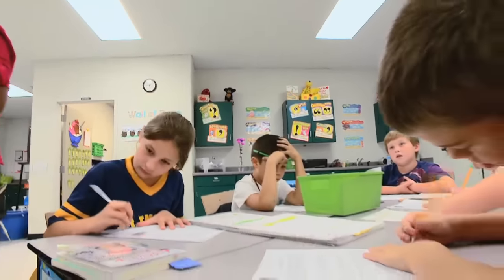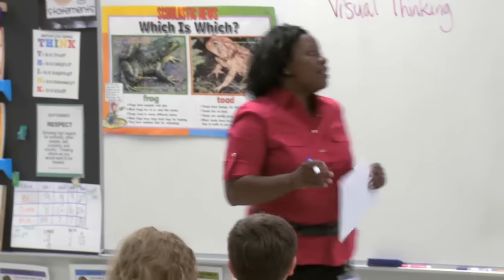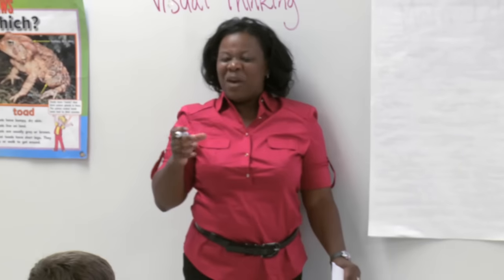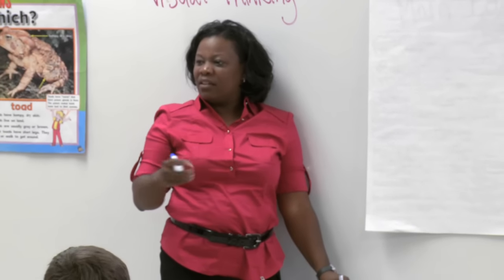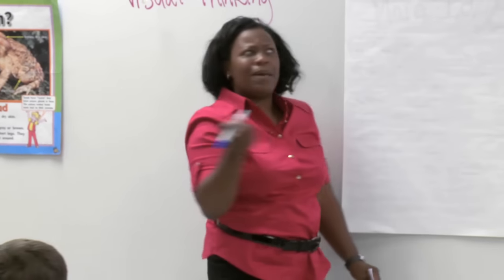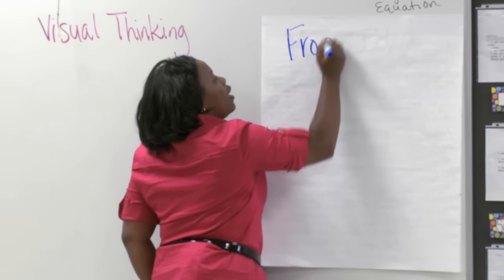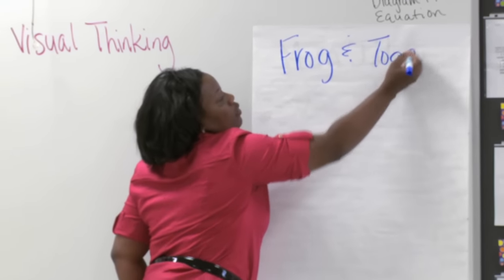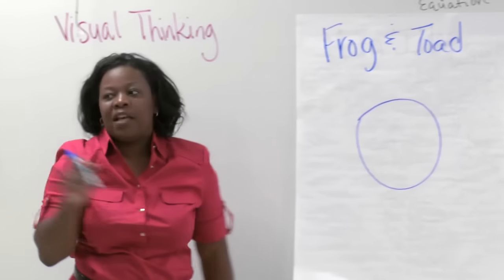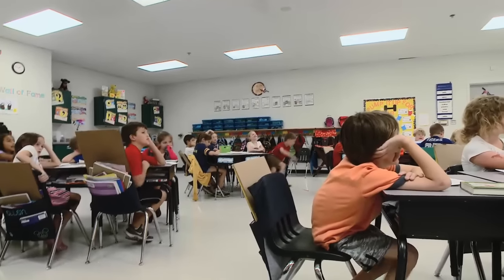I saw some excellent main ideas as I was going around — I think we pretty much all have the same thought in mind. When I want to organize my thoughts about main idea, what's a good way to do that? Isabella: A main idea web. Let me draw one of those. We're going to label it Frog and Toad. In the middle of our web we always put the main idea.